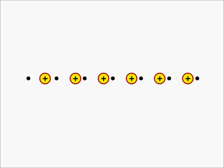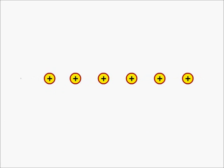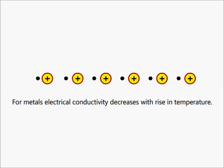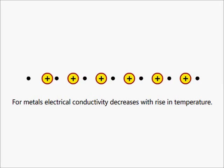However, at high temperatures, the vibrating mode of metal ions will increase, which will definitely hinder the flow of electrons, and so electrical conductivity of metals decrease as temperature is increased.